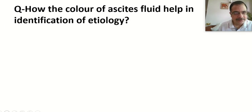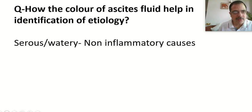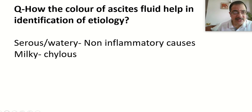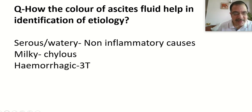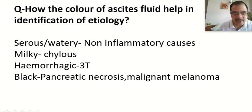The color of ascitic fluid helps identify etiology. Serous or clear fluid indicates non-inflammatory causes like nephrotic syndrome. Milky fluid indicates chylous effusion — triglycerides more than 200 mg/dL in peritoneal fluid. The most common surgical cause of chylous ascites is surgical trauma causing disruption of lymphatic drainage; the most common non-surgical cause is cirrhosis. Hemorrhagic ascites is caused by the 3Ts: tumor, trauma, and tuberculosis.